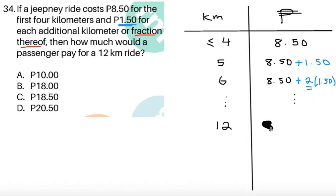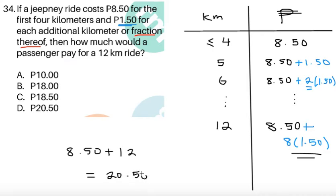So for 12 kilometers, we should have 8.50. And then since we traveled 8 additional kilometers, we should be having 8 times 1.50. So all we have to do is simplify this. So it's going to be 8.50 plus 8 times 1.50, which is going to give you exactly 12. So 8.50 plus 12, you guys can do the math, and this is going to give us 20.50. So from the four choices, we have choice D.